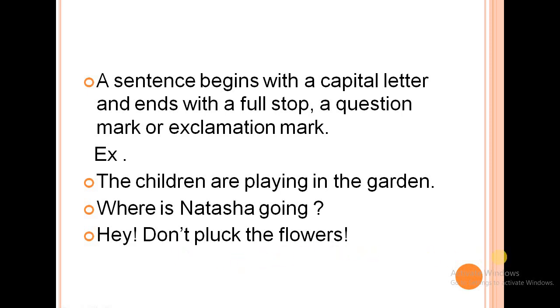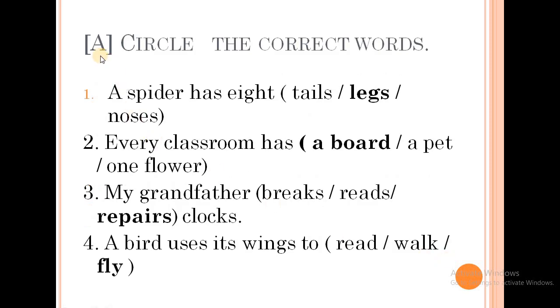Now let's see Exercise A. Circle the correct words. A spider has eight... In the bracket, three options are given: tails, legs, noses. So the correct answer is legs. Here I have written it with bold letters. In the notebook, you have to put a circle around the correct answer. The spider has eight legs.